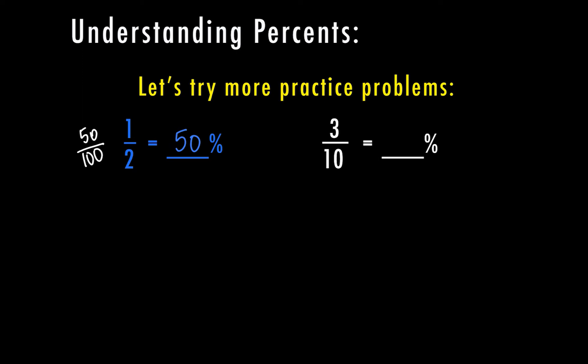Next, three-tenths. We need to change this to a denominator of one hundred. Ten goes into one hundred ten times, and three times ten is thirty. So this would be thirty percent.